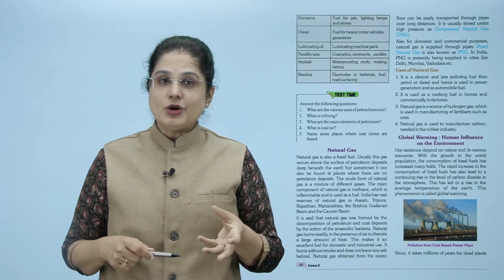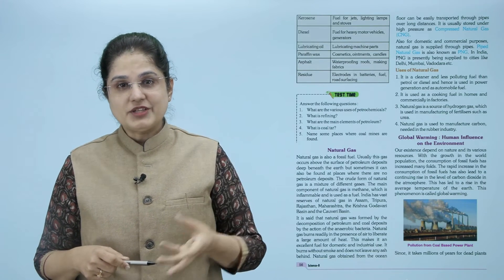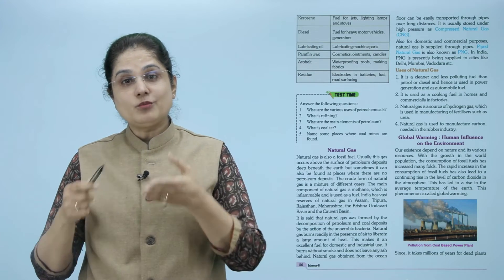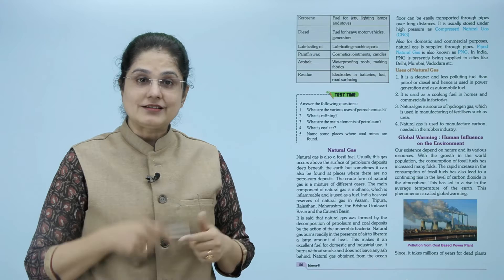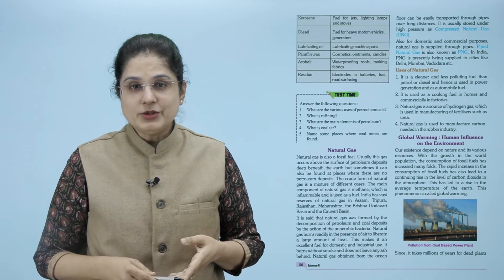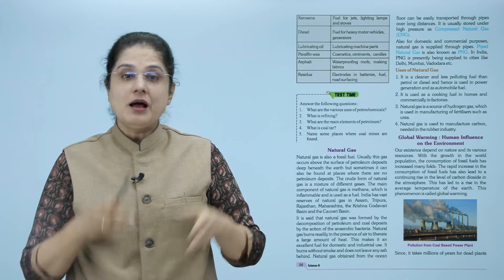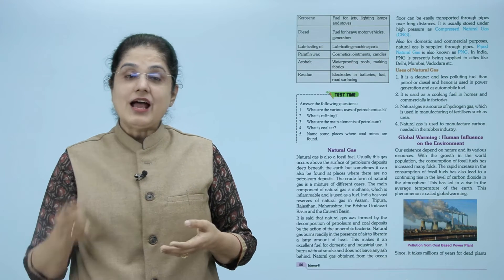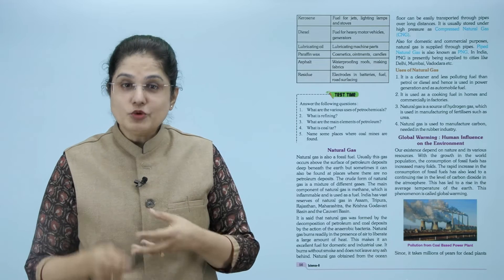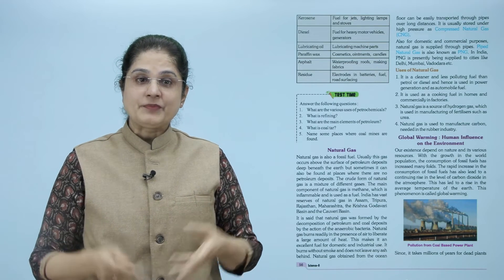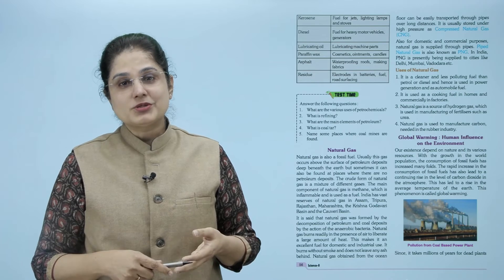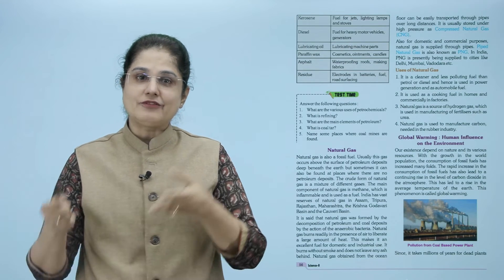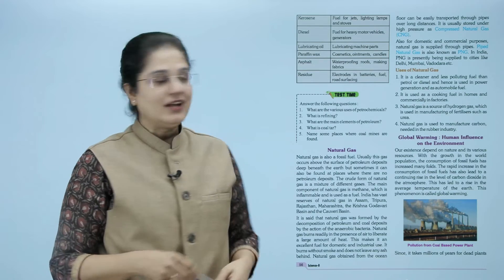Kerosene को use करते हैं as fuel for jets, lighting lamps and stoves। Diesel use होता है fuel for heavy motor vehicles और generators में। Lubricating oil use होता है for lubricating machine parts। Paraffin wax is used in cosmetics, ointments, and candles। Asphalt is used for waterproofing roofs and making fabric। जो residue बच जाता है उसको use करते हैं for making electrodes in batteries, as fuel, and for road surfacing।